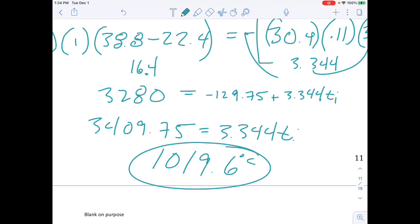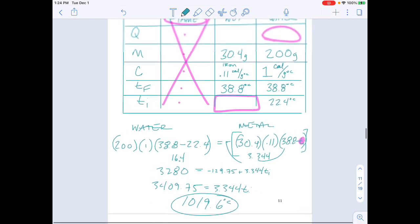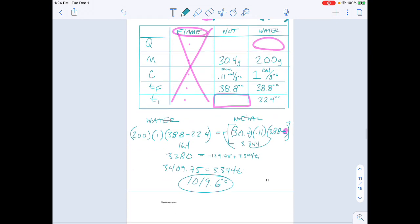So that is how we would determine our initial temperature of a flame, even though we don't have any information about it. We have the information about the metal nut and the water. We're able to set those two equal to each other, solve for the ti of the metal, and that is equal to the temperature of the flame.